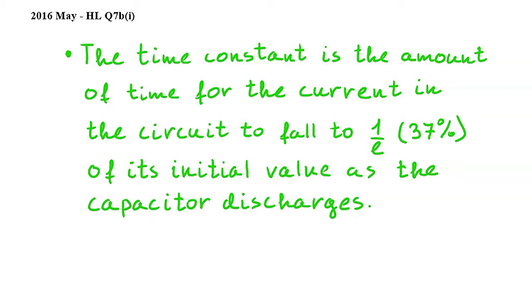In this question we have to explain what is time constant. Well, it is the amount of time for the current in the circuit to fall to 1 over E, or approximately 37% of its initial value as the capacitor discharges.